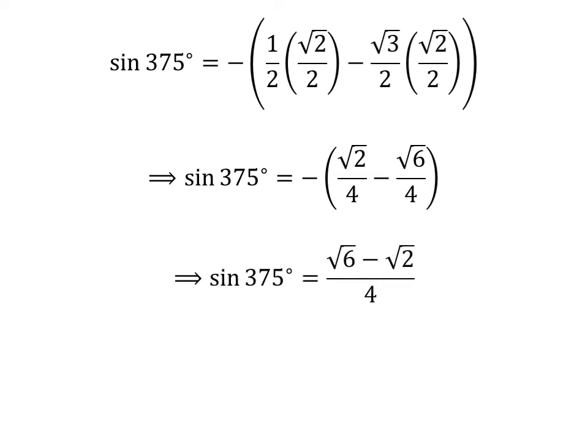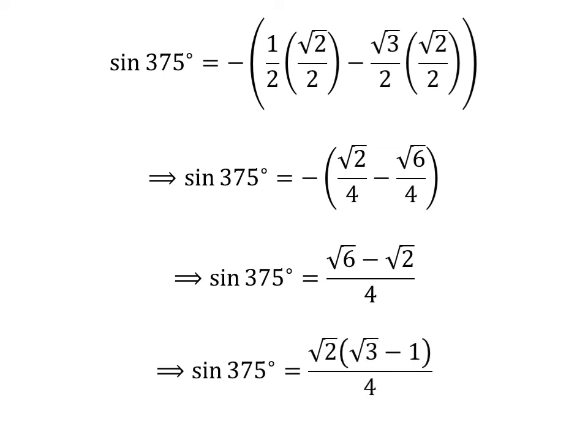As the denominator of both fractions in the above expression is the same, sine of 375 degrees is equal to negative square root of 6 minus square root of 2, all over 4. Taking out the common factor square root of 2 in the numerator gives us sine of 375 degrees is equal to square root of 2 times the quantity square root of 3 minus 1, over 4.